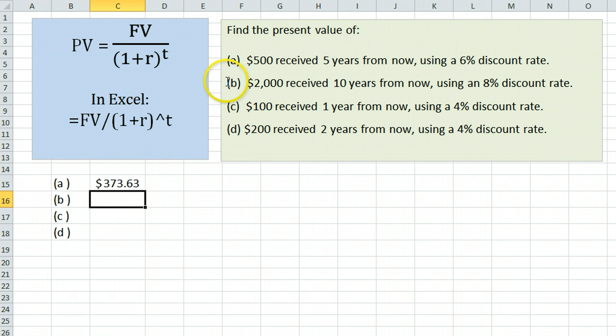In our second example, $2,000 received 10 years from now using an 8% discount rate, same procedure: equals the future value, 2000, divided by 1 plus the interest rate, 8% expressed as a decimal, 0.08, close parentheses, raised to the 10, because it is 10 years from now. Answer: 926.39.